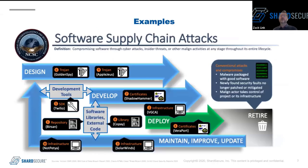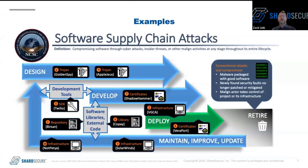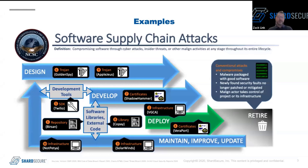Here are some examples of high-profile attacks and where they fit into the development pipeline. Most of these are probably familiar to you, but notice how each one attacks a different weakness — showing how wide the attack surface is and how difficult it is to secure. For example, the VGCA and Veraport attacks both exploited the deployment phase of the pipeline. They didn't alter any of the legitimate code, but were able to embed malware into a distribution platform so that any customer who installed the legitimate software also got malware installed at the same time.